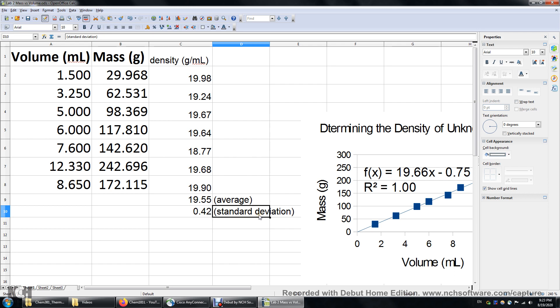The standard deviation tells us something about the precision. The average, we'll have to compare the average with the literature value to understand the accuracy of our data. Assuming this metal is gold, gold has a density of 19.3 grams per milliliter. So in this case we have a fairly high accuracy and a fairly good precision. So both are pretty good.